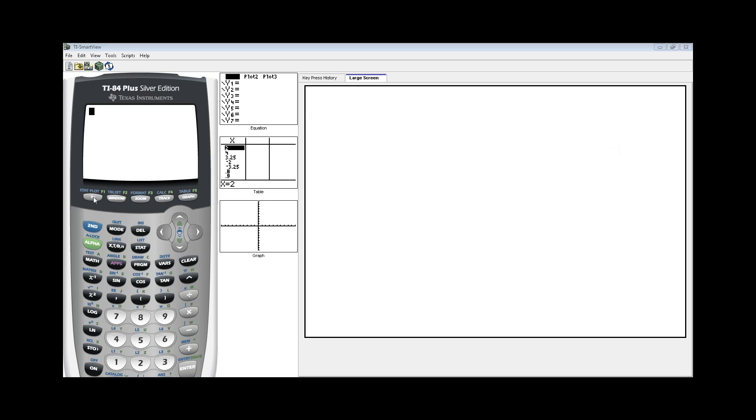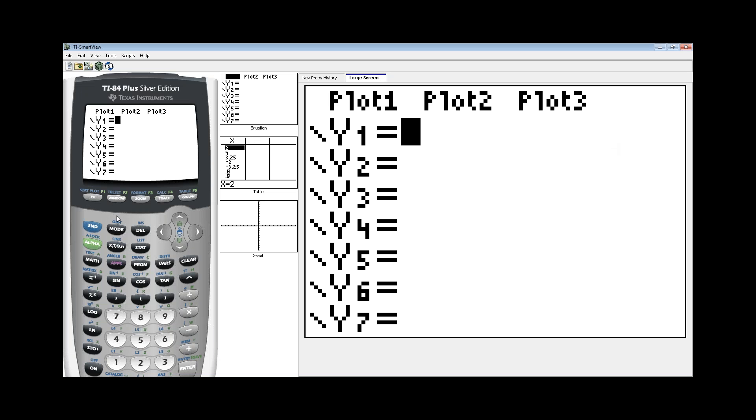On our graphing calculator, press y equals and start plugging in both of the equations. So the first one is 9x plus 1 and the second is also 9x plus 1. When you hit graph